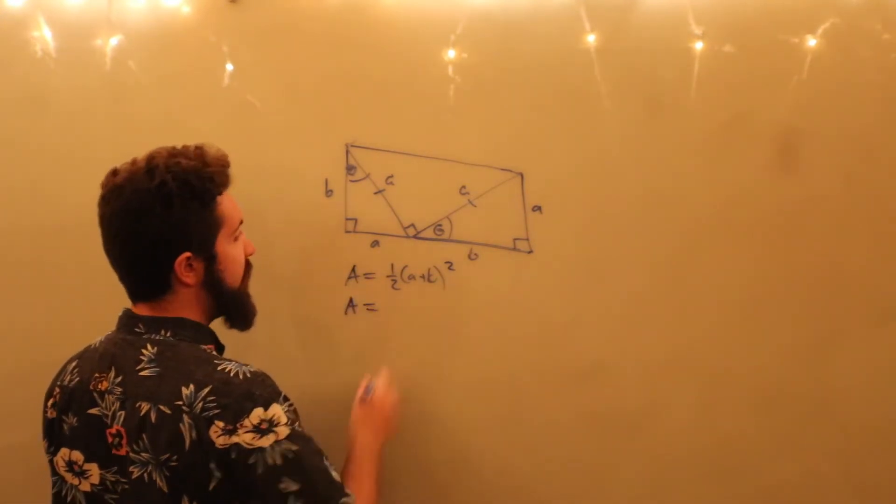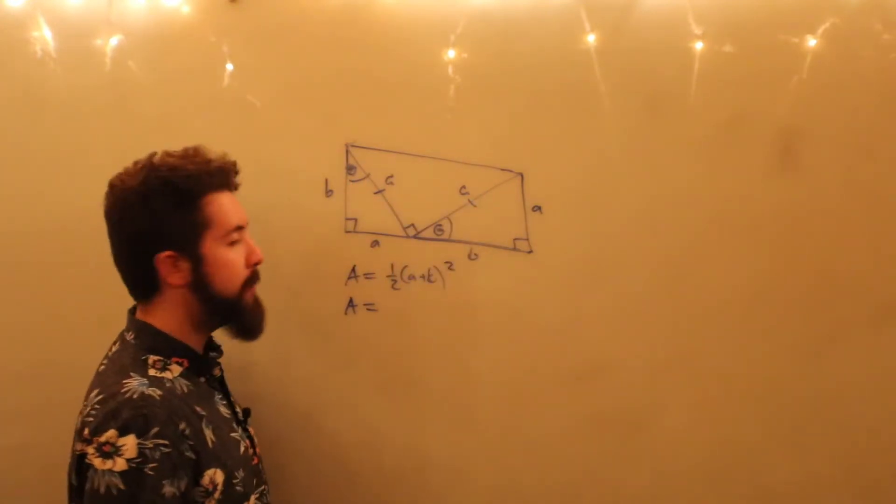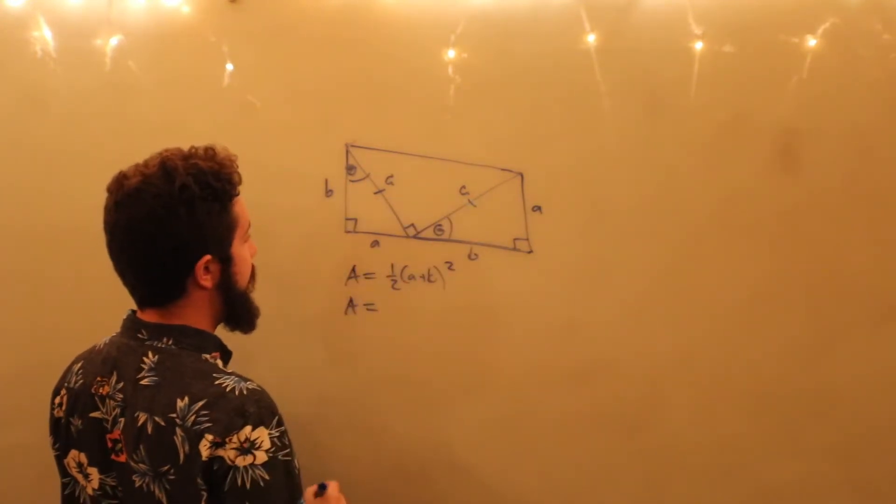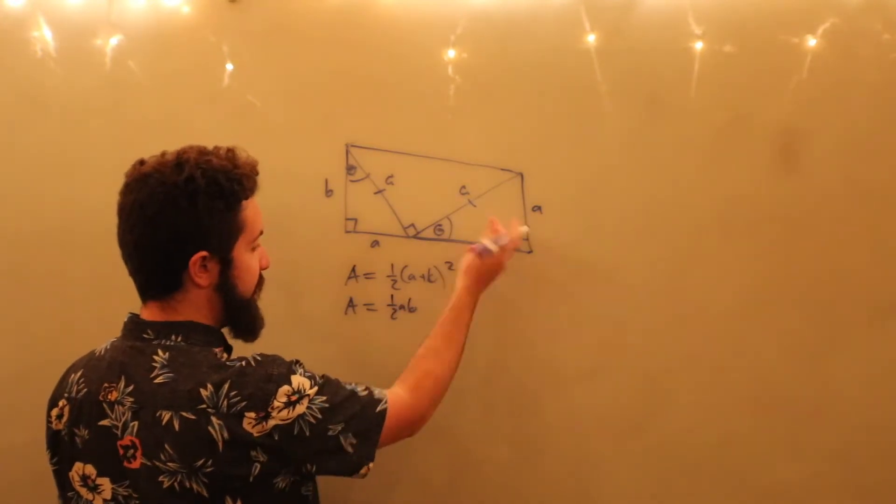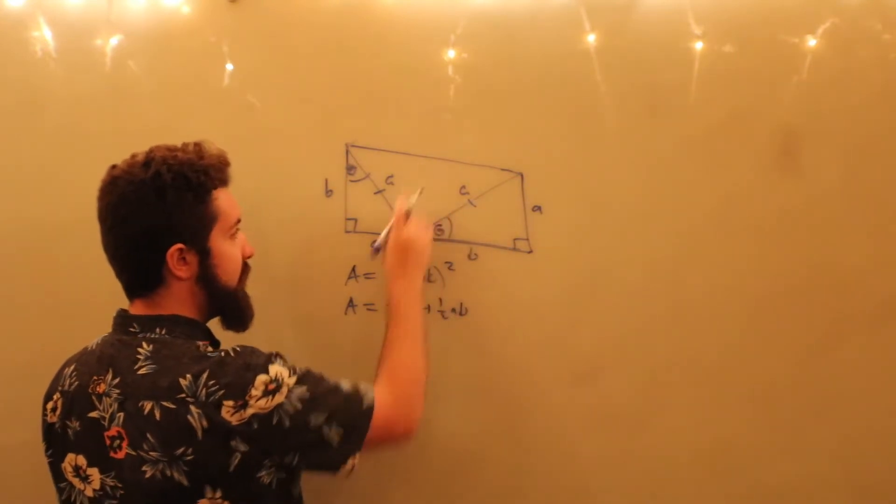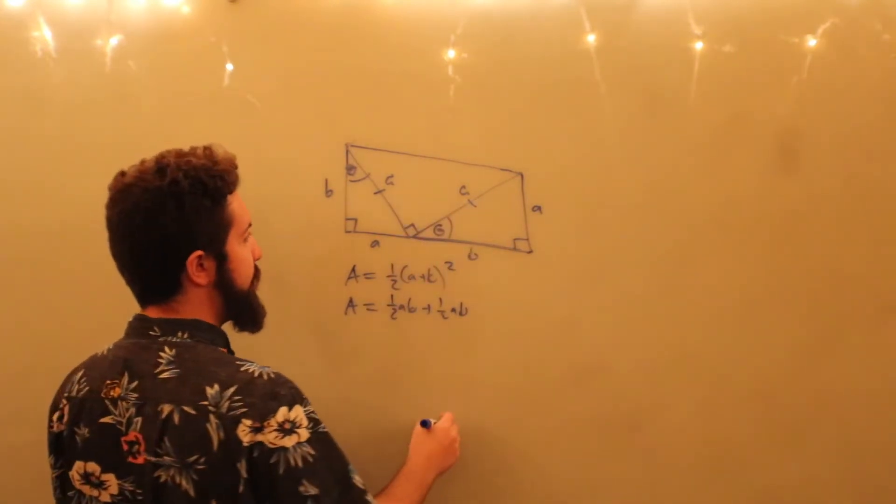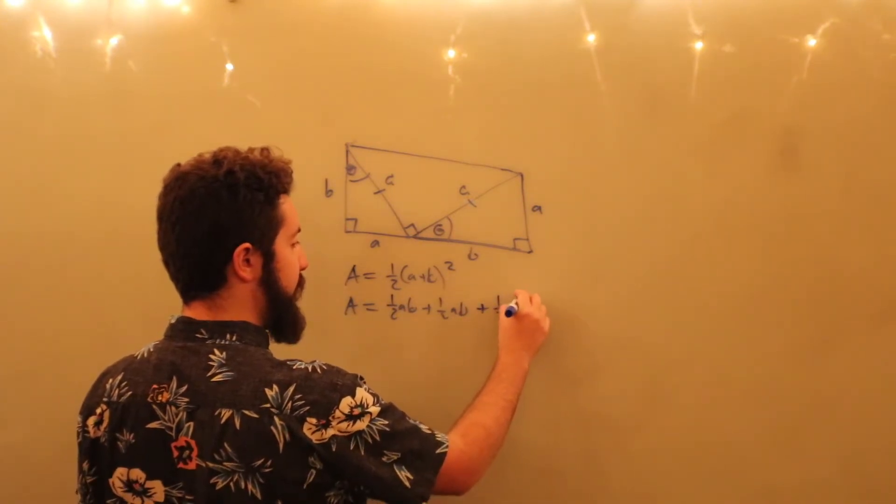Now, the area is also going to be equal to the sum of these three areas. Well, this is just the area of a triangle, so 1/2 AB plus, again, the same triangle, so 1/2 AB plus the area of half of the square with side length C, so that's going to be plus 1/2 C².